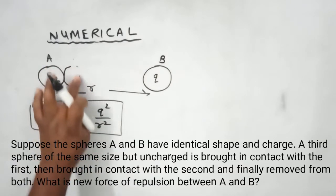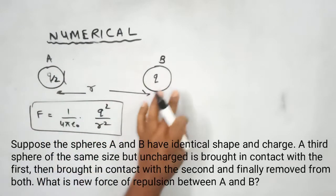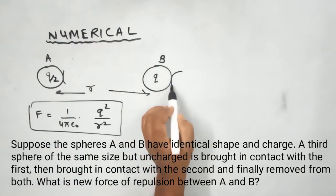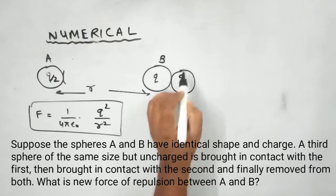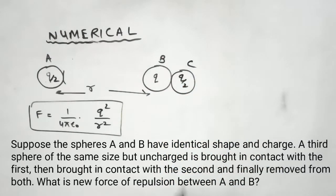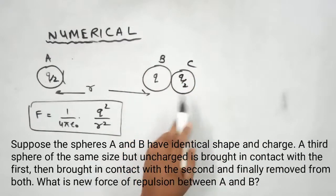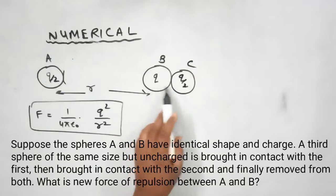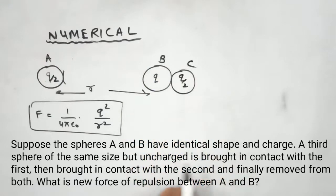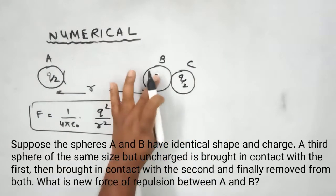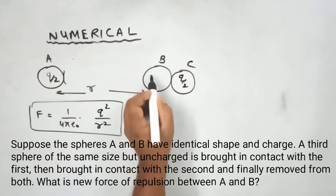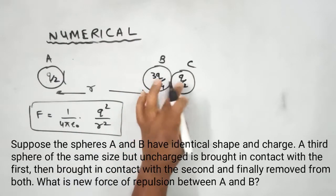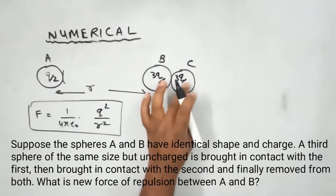Now sphere C with Q by 2 is brought to sphere B. This is Q by 2 and this is Q. When both are joined, what will happen? Charge will redistribute equally. Total charge will be how much? This is Q and this is Q by 2. Total will be 3Q by 2. So this means total 3Q by 2, half of it will be on each. So this will be 3Q by 4 and this will be 3Q by 4.